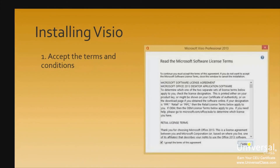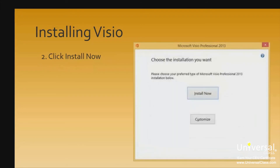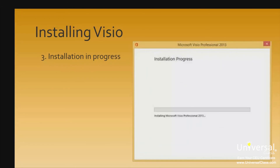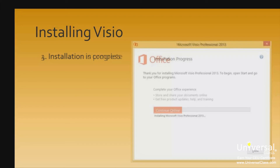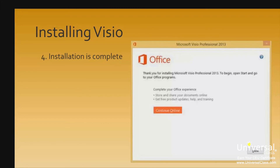Once you open the setup file, a screen will appear. Read the terms and conditions, click 'I accept the terms of this agreement', and then click Continue. The next screen will appear — click the Install Now button. Visio Professional will then start to install. Once it's finished installing, you'll see a completion screen and can click Close.